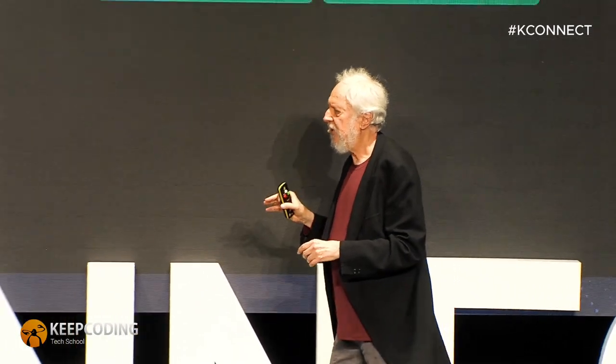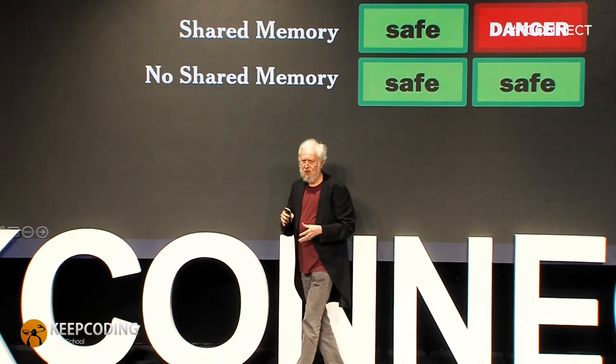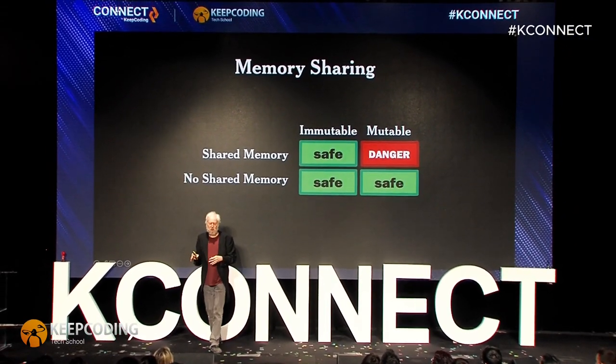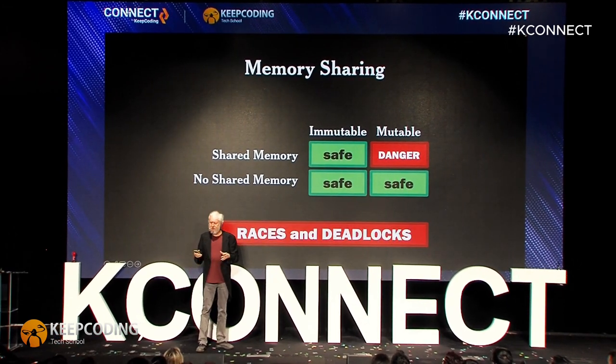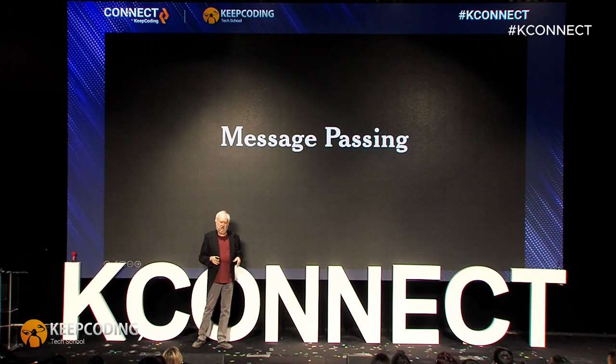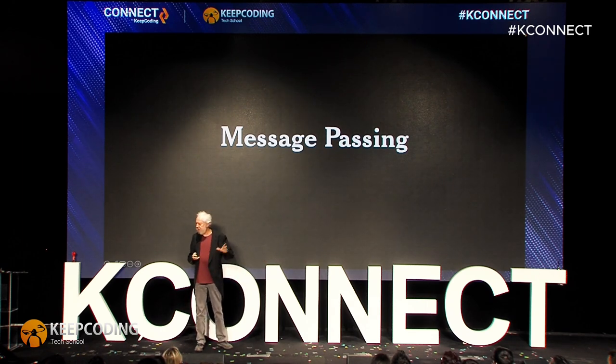Just having independent processes is great, but it's not enough. We want inter-process communication, because there are lots of interesting things that can happen if processes can work together. The three most popular techniques are memory sharing, file I/O, and message passing. Memory sharing is the most popular but also the most dangerous — I don't recommend it. It works well if the shared memory is immutable, but if it's mutable you get races and deadlocks, the sorts of problems where you have to turn the machine off and on to fix it. The better approach is message passing, where a process sends a message to another process. That's the form I'm advocating.